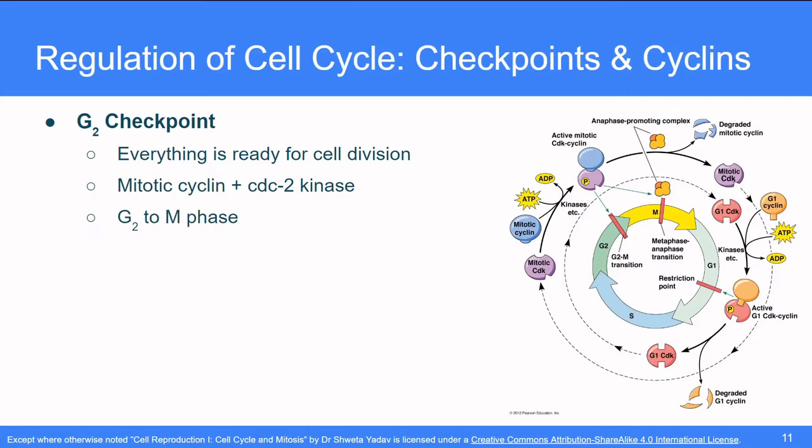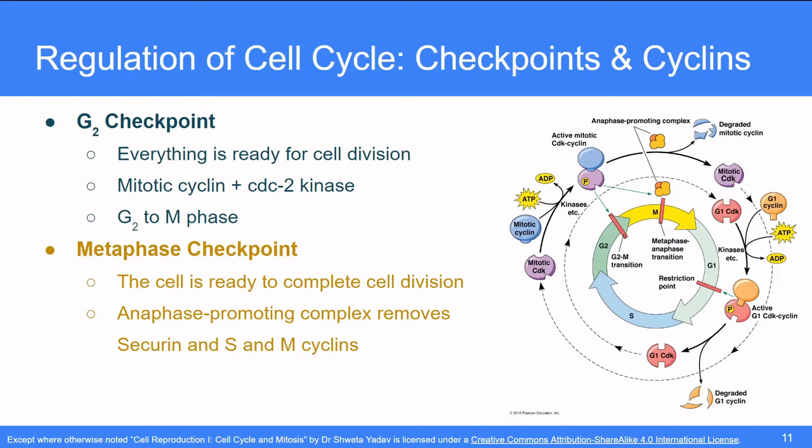The third checkpoint is the metaphase checkpoint which ensures that the cell is ready to complete the cell division by checking the spindle formation. If the spindle formation is perfect then the anaphase promoting complex removes Securin S and M cyclins from the cytoplasm and the cell proceeds from metaphase to anaphase. But in case the spindle formation is not perfect, the Securin S and M cyclins are not removed and the cell cycle is arrested at metaphase only. After this checkpoint is passed, the cell goes all the way to cytokinesis and formation of two daughter nuclei happens. So this is all about the cell cycle and its phases and regulations.